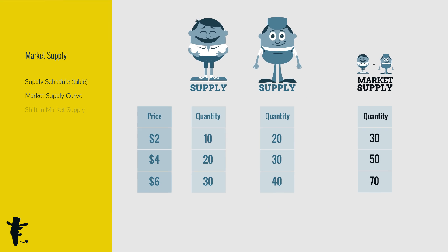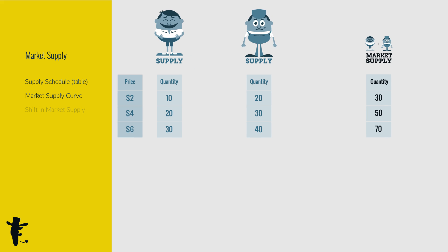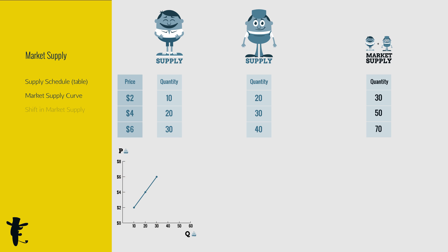How do these tables look like in graphs? Let's graph John's supply curve first. At $2, John supplies 10 cakes. At $4, 20 cakes. At $6, 30 cakes. That's John's supply curve, and this is Tom's supply curve.